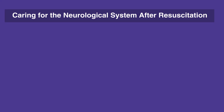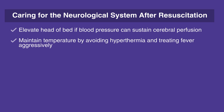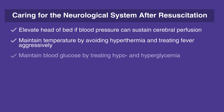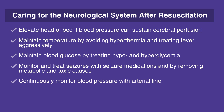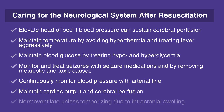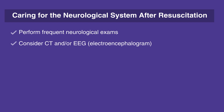When caring for the neurological system after resuscitation, follow this checklist. Elevate head of bed if blood pressure can sustain cerebral perfusion. Maintain temperature by avoiding hyperthermia and treating fever aggressively. Do not re-warm hypothermic cardiac arrest individuals unless hypothermia is interfering with cardiovascular function, and treat hypothermia complications as they arise. Maintain blood glucose by treating hypo- and hyperglycemia. Hypoglycemia is defined as less than or equal to 60 mg per deciliter. Monitor and treat seizures with seizure medications and by removing metabolic and toxic causes. Continuously monitor blood pressure with arterial line. Maintain cardiac output and cerebral perfusion. Normal ventilate unless temporizing due to intracranial swelling. Perform frequent neurological exams. Consider CT and/or EEG, electroencephalogram.